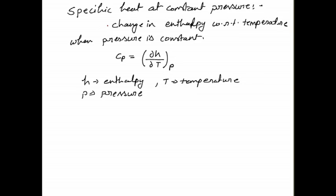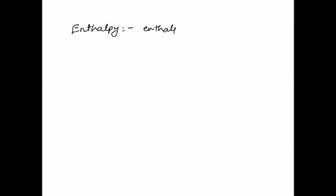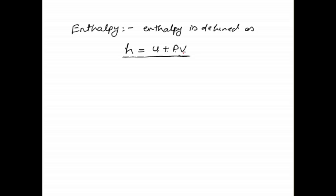Before knowing about specific heat at constant pressure, we just need to know about enthalpy first. Enthalpy is a property of the system. We denote enthalpy by H, and the formula is H = U + PV. This equation defines the enthalpy, where U is the internal energy, P is the pressure, and V is the volume.